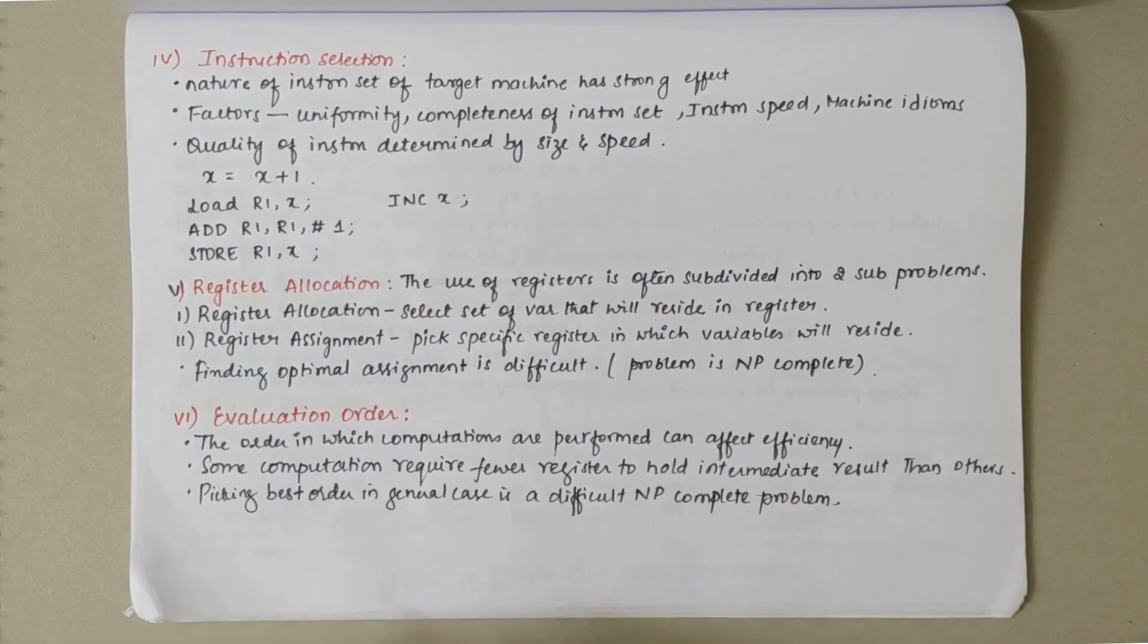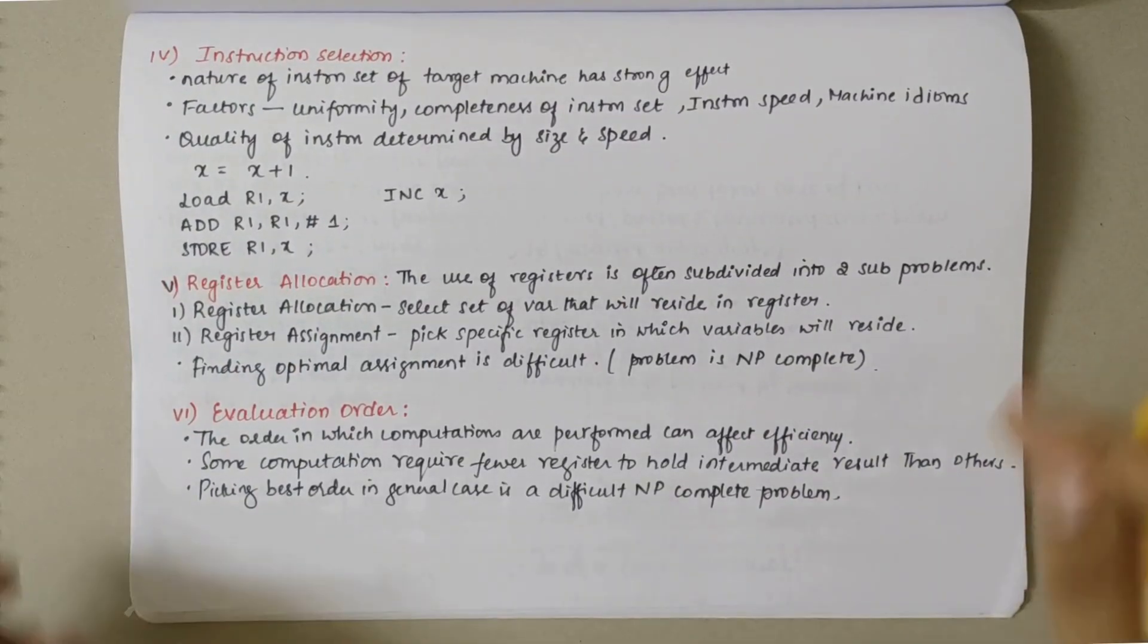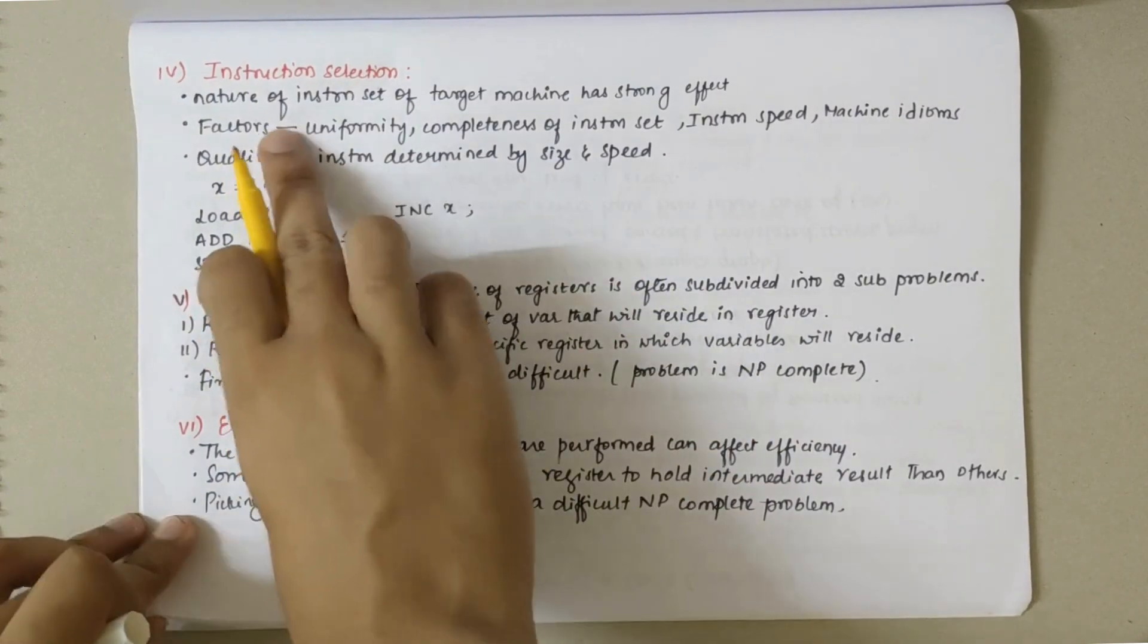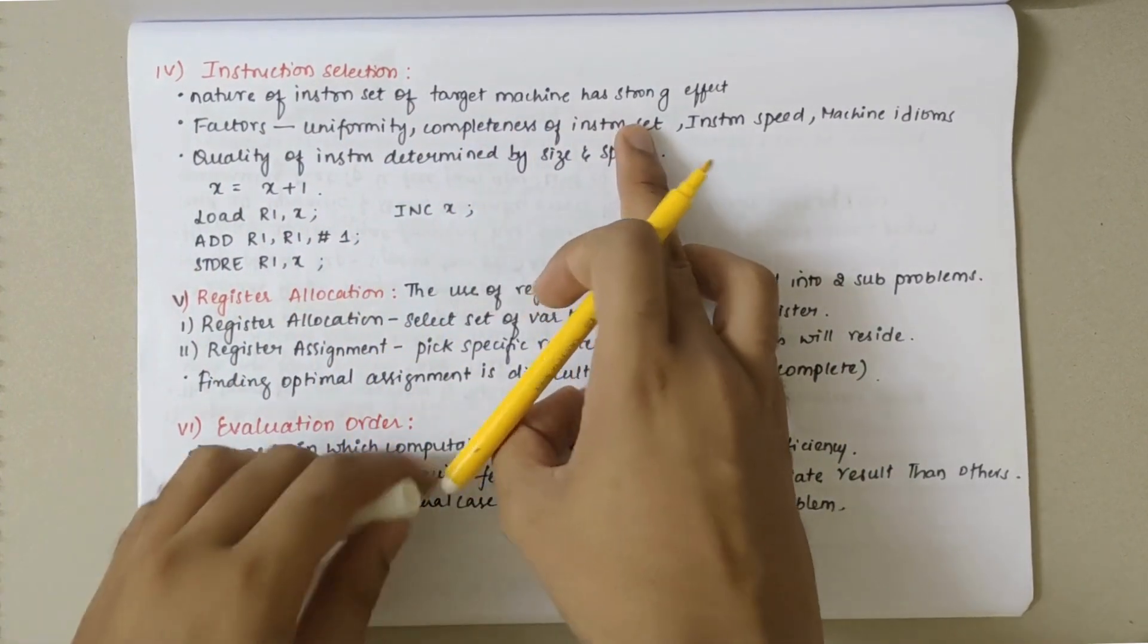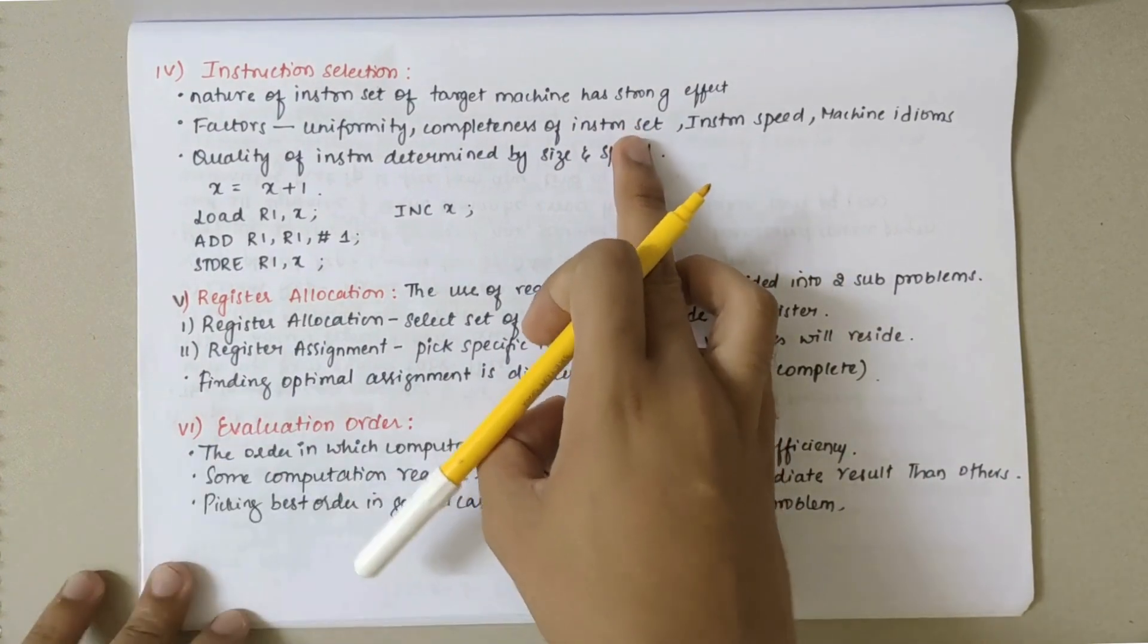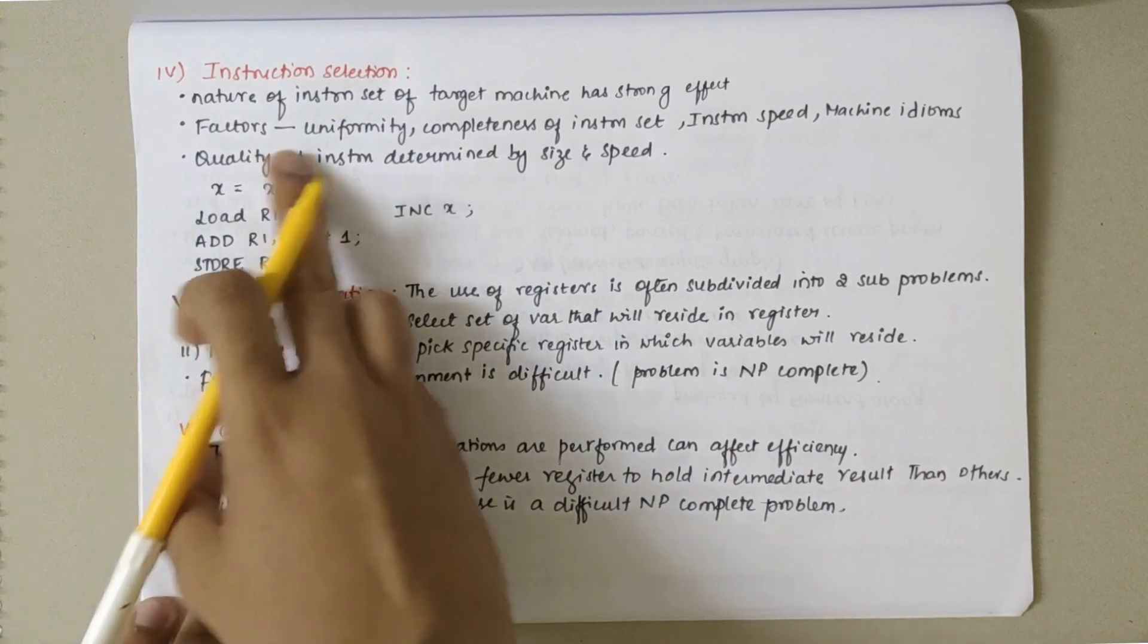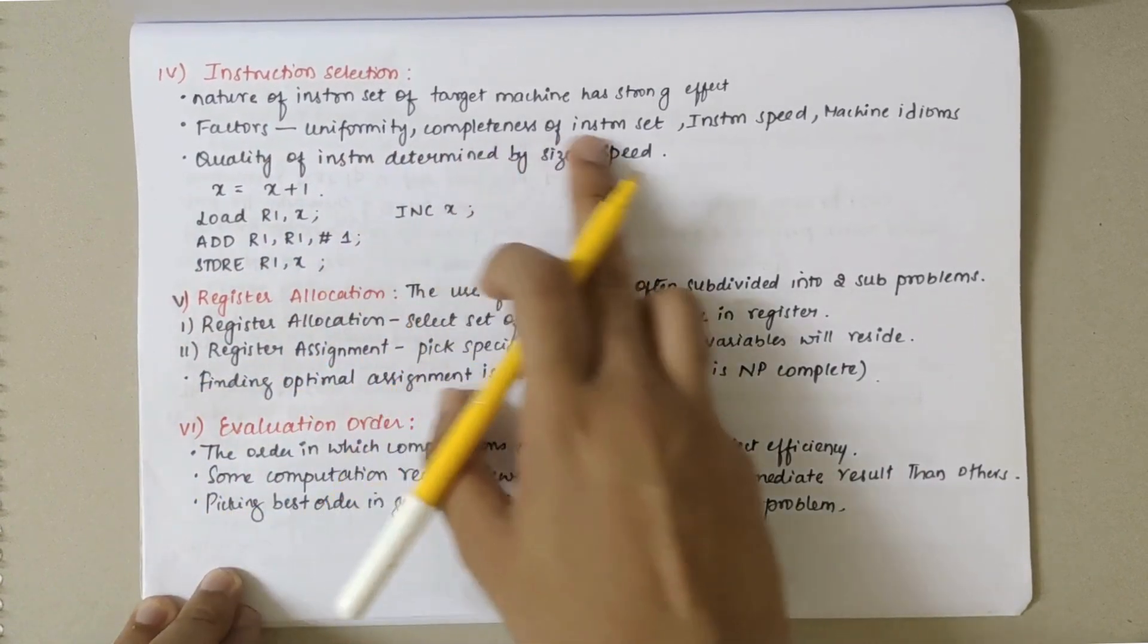The fourth issue is instruction selection. While selecting the instructions, it is very important to select the instruction properly. Nature of instruction set of target machine has a strong impact on the code generation.